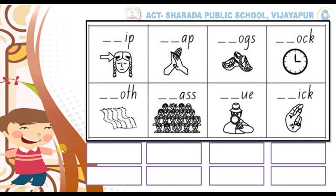For example, kids, can you identify what it is? Yes, yes, yes, you are right. It is clip. Then we have to write the missing letters here — C, L, I, P. Now the word is clip. So write the same word in the given box like this. In the same way, you have to complete the remaining ones.